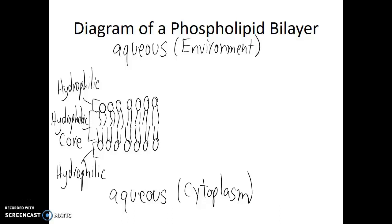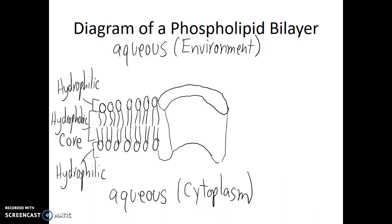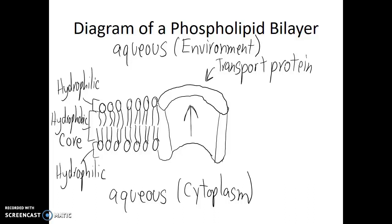Occasionally, interspersed within this plasma membrane, we will have transport proteins. You can envision these transport proteins as being sort of barrel-shaped or tunnel-shaped. These proteins can allow larger molecules and hydrophilic molecules the ability to move into or out of the cell. Some of these transport proteins will also be very specific and only allow certain molecules to get through. Others will be gated, so sometimes they'll be open and sometimes they'll be closed.